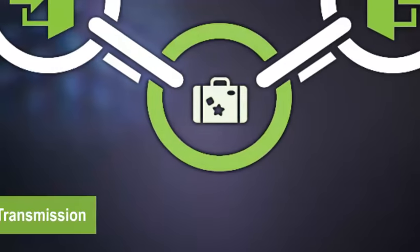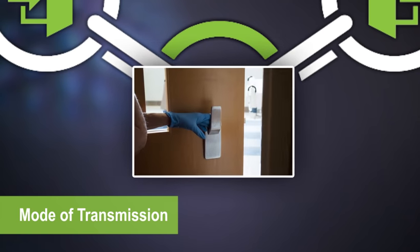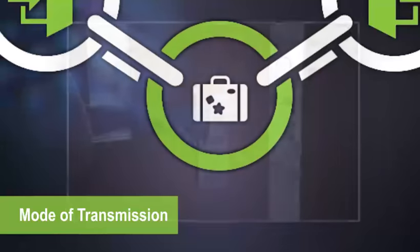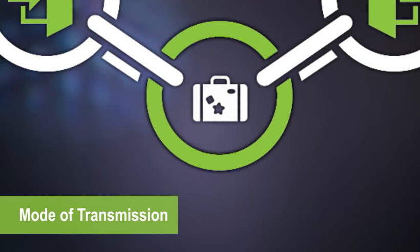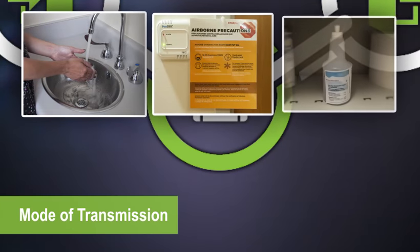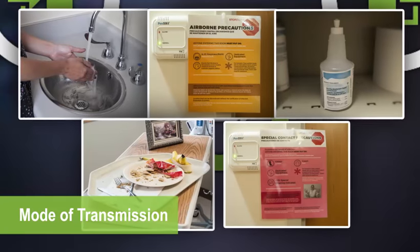The fourth link is the mode of transmission. This is how pathogens are carried from one place to another, even on the hands of a healthcare worker. To break this link, wash your hands, control airflow in negative pressure rooms, disinfect surfaces, handle food properly, and observe isolation precautions.